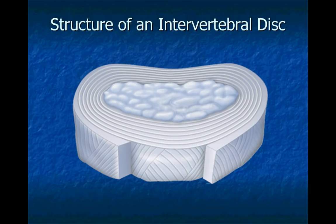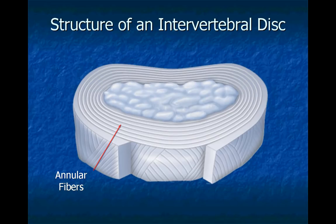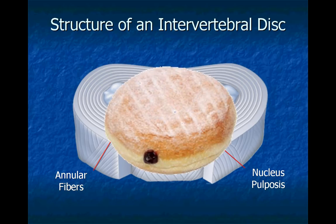These fibers on the outer parts of the disc are called the annular fibers. Inside the center of a disc is material called the nucleus pulposus. Imagine a jelly-filled donut — the annular fibers are the outside, and the nucleus pulposus is the filling.